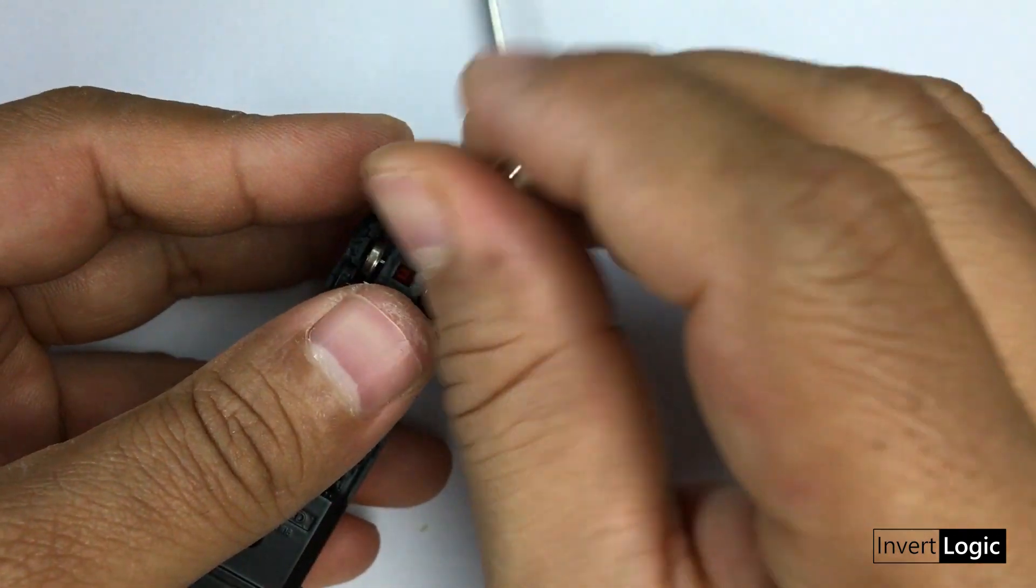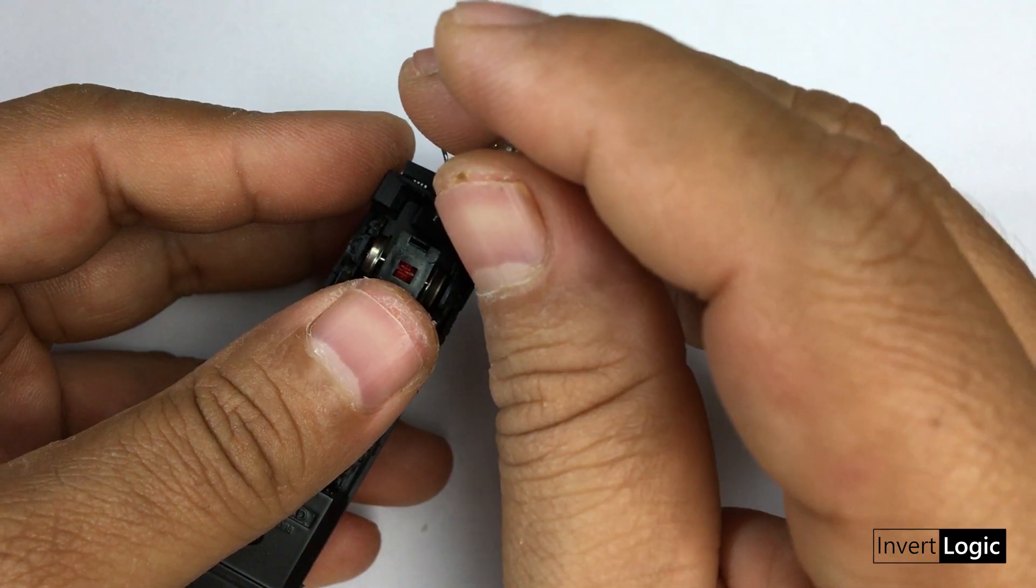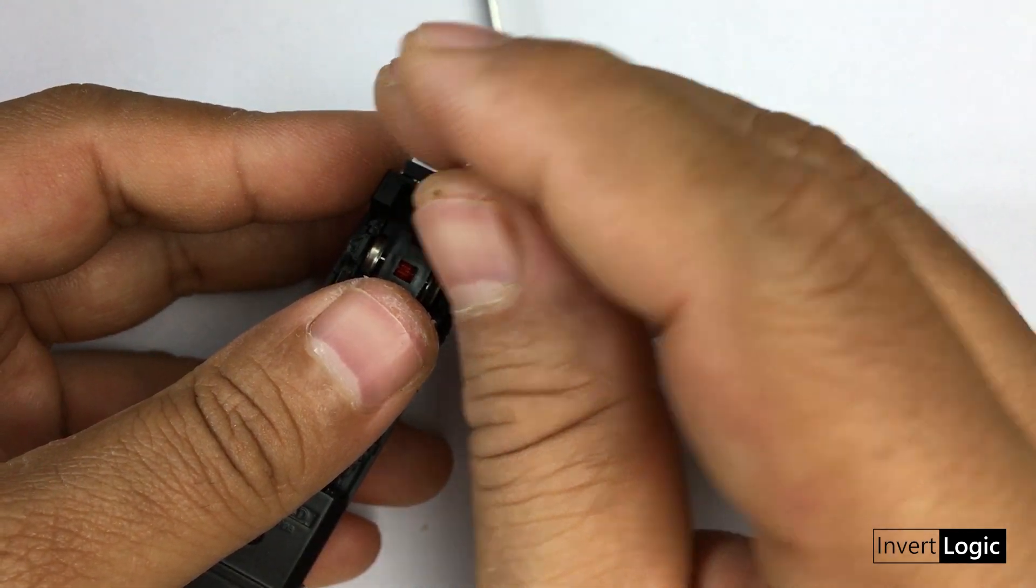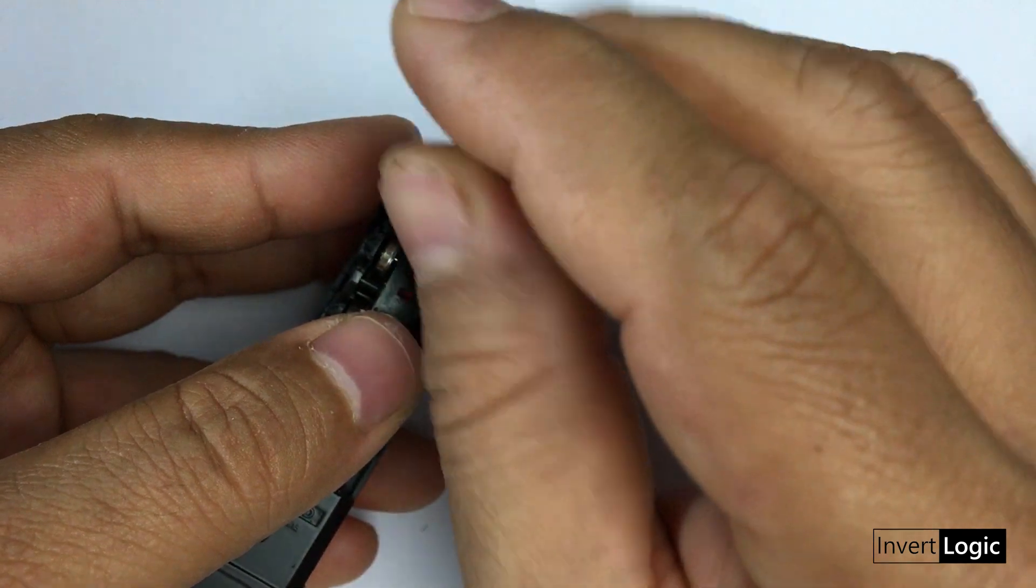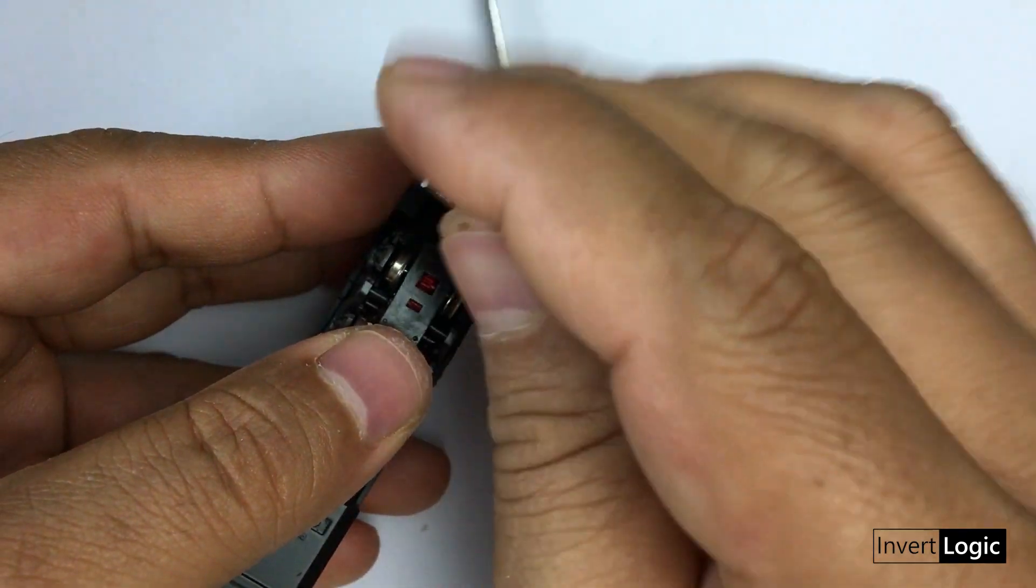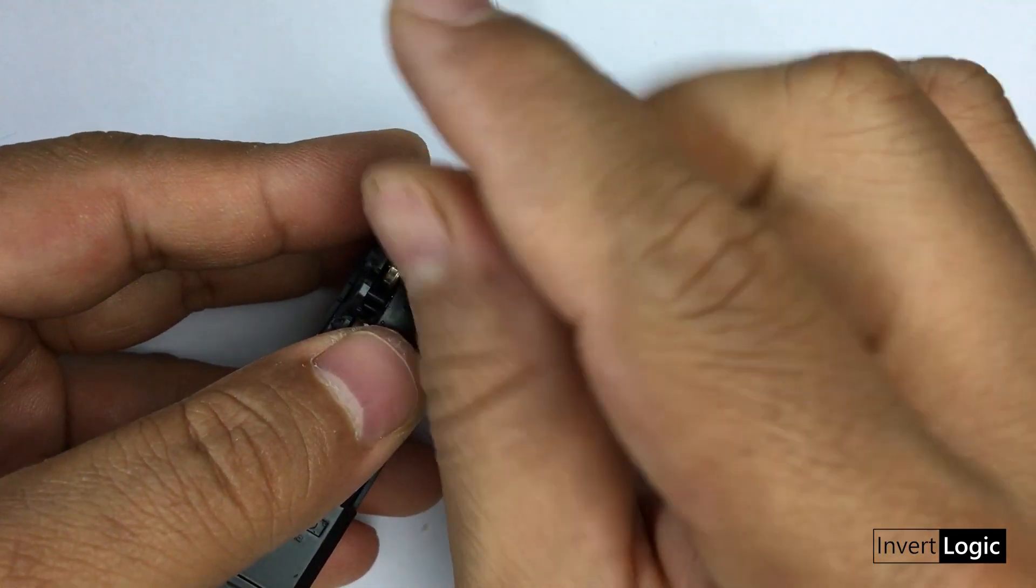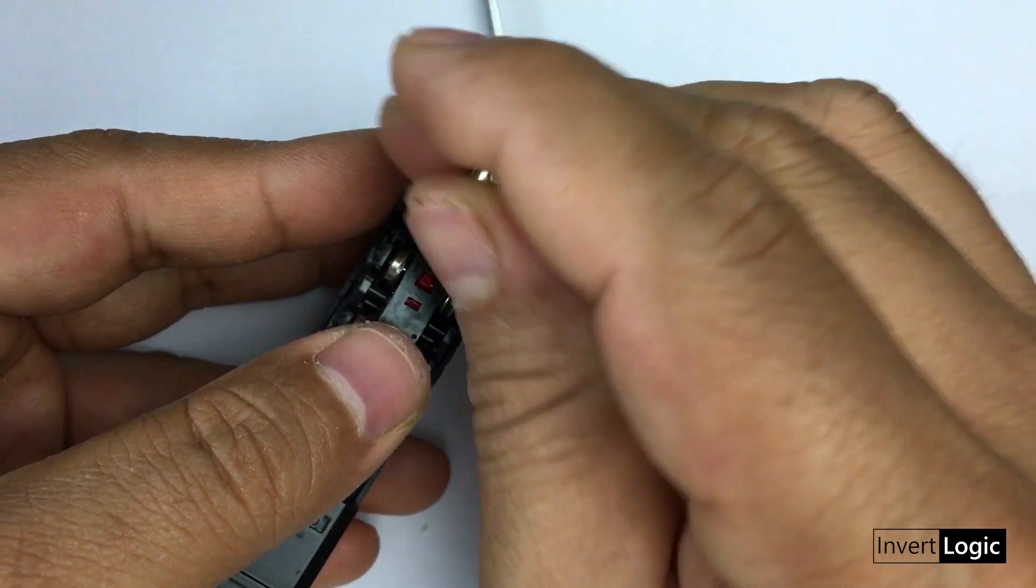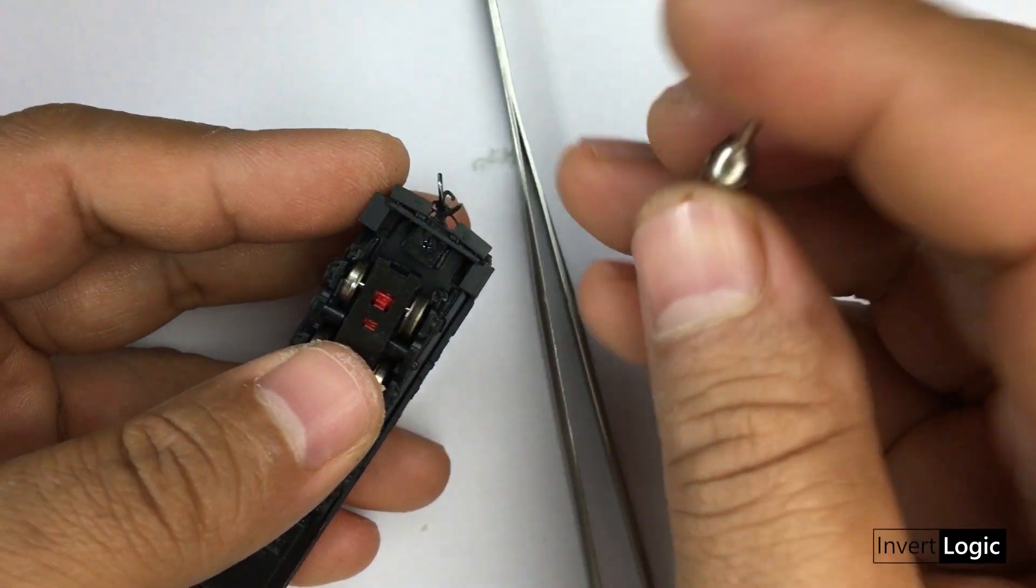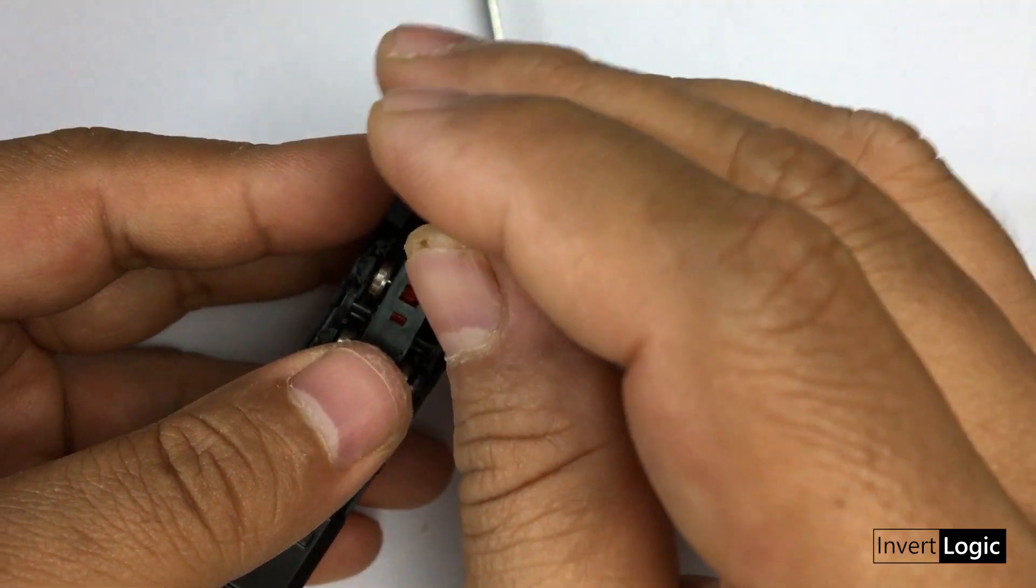Do this very gently because you might make the whole knuckle coupler assembly come out of the locomotive while it's not yet grabbed by the screw. This is a very tricky and sensitive part.